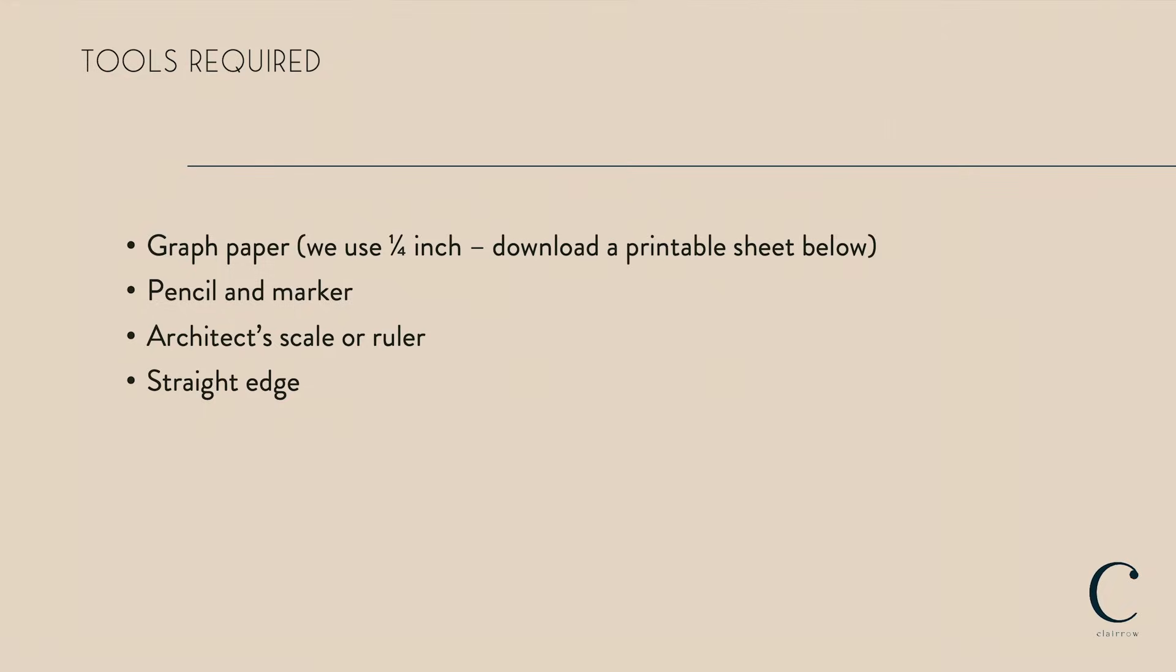Let's start with manually drawing your room on graph paper. You'll need a few tools to complete this exercise: graph paper (we use a quarter inch and you can download a printable sheet below), a pencil and a marker (we trace over our final lines in black marker), an architect's scale or a ruler, and a straight edge.